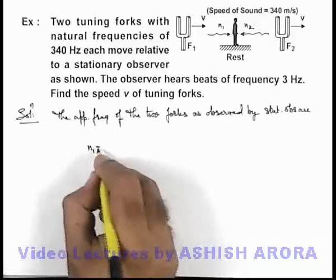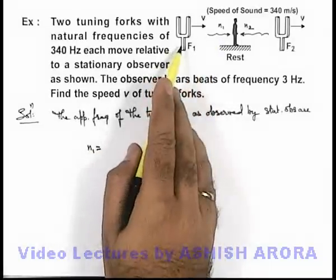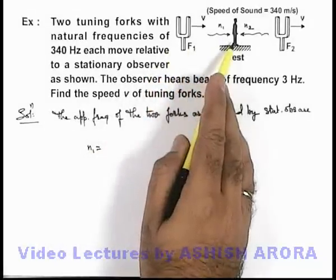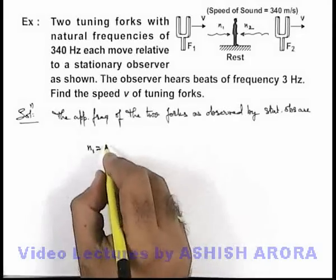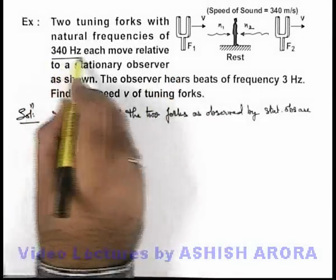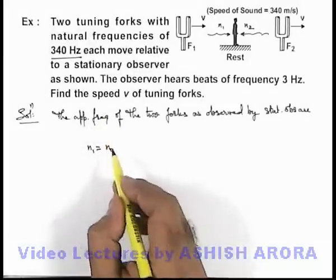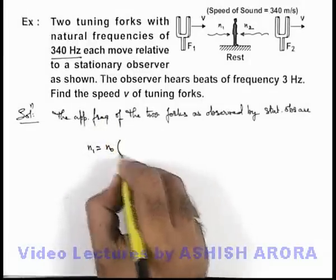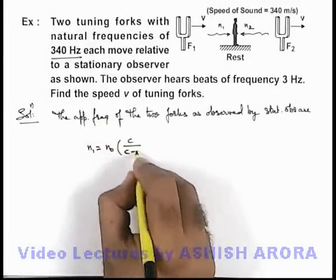These can be calculated as n1, which is due to the fork moving towards the observer, can be given as n naught, the actual frequency which is 340 hertz, multiplied by c divided by c minus v.